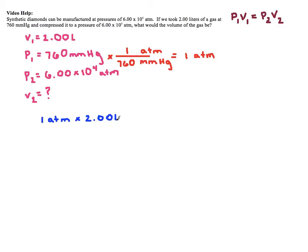My P2, and honestly, the order in which you do these, like if you wrote the 2 before the 1, that's fine. It doesn't matter. My P2 is 6.00 times 10 to the 4th. And I'm going to multiply that by my V2.